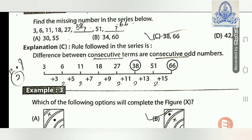Next, find the missing number in the series: three, six, eleven, eighteen, twenty-seven, question mark, fifty-one, question mark. These are terms with consecutive odd number differences. The difference between three and six is three, six to eleven is five, eleven to eighteen is seven, eighteen to twenty-seven is nine. So the next difference is the next odd number: eleven.